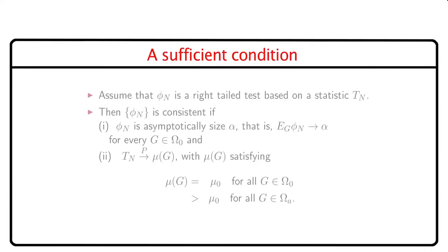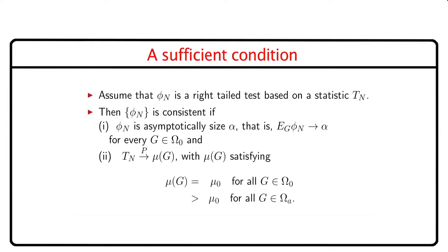We shall provide a sufficient condition for consistency which will be easier to verify in practice. Assume that φₙ is a right-tail test based on a statistic tₙ. Then φₙ is consistent if: (1) φₙ is asymptotically size α, that is the expected value of φₙ tends to α where g is specified by the null hypothesis for every g; and (2) the statistic tₙ converges in probability to some function μ(g) where μ(g) > μ₀ for every g belonging to Ωa.